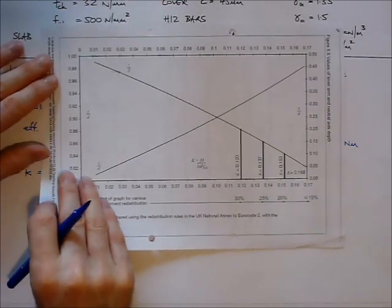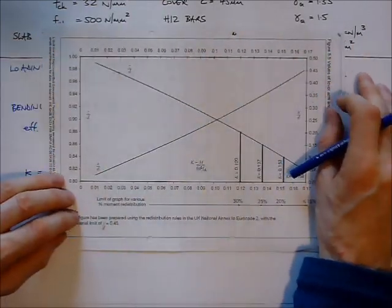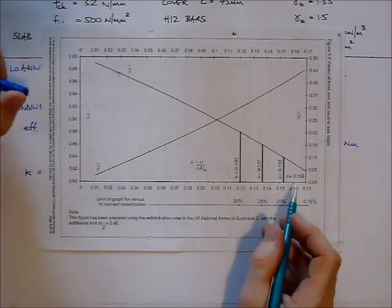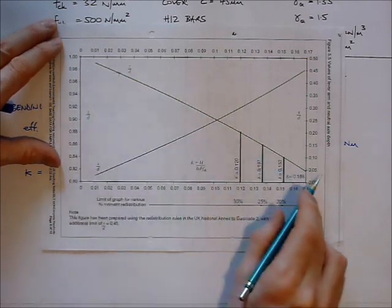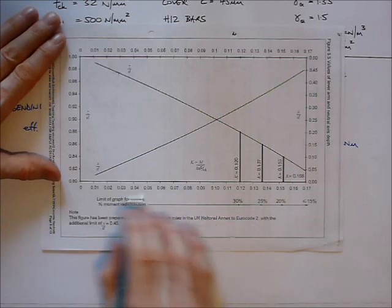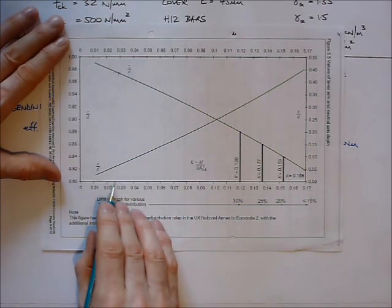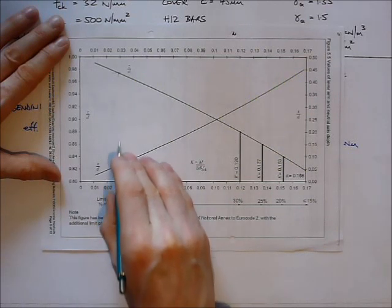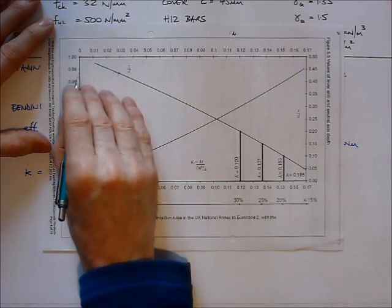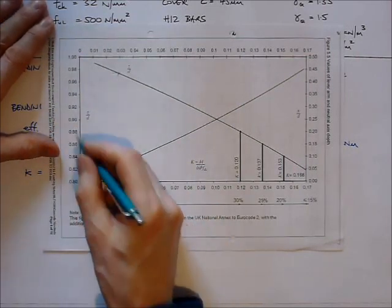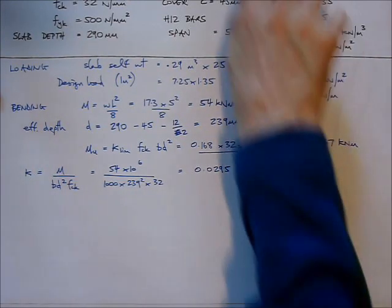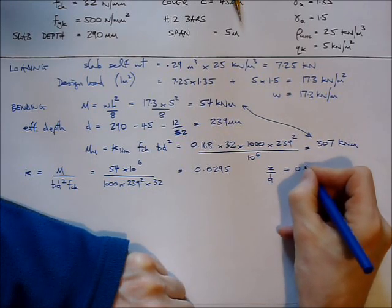Now I'm going to make use of a figure which I've taken from the IStructE manual for the design of reinforced concrete buildings. This chart can be used to find lever arm Z using this curve. On this K axis, I punch in 0.0295, which gets me about here, run up to where I hit the graph, and I run left to the axis which deals with lever arms Z over d. So I run across to here and I figure that that's around about 0.975.